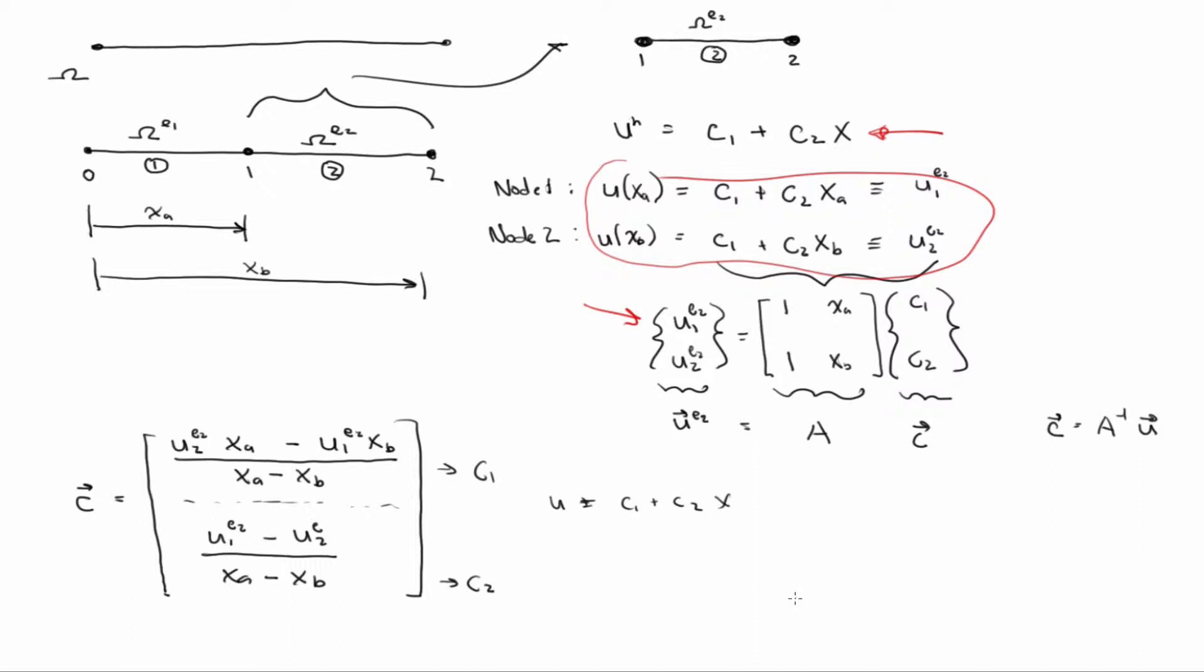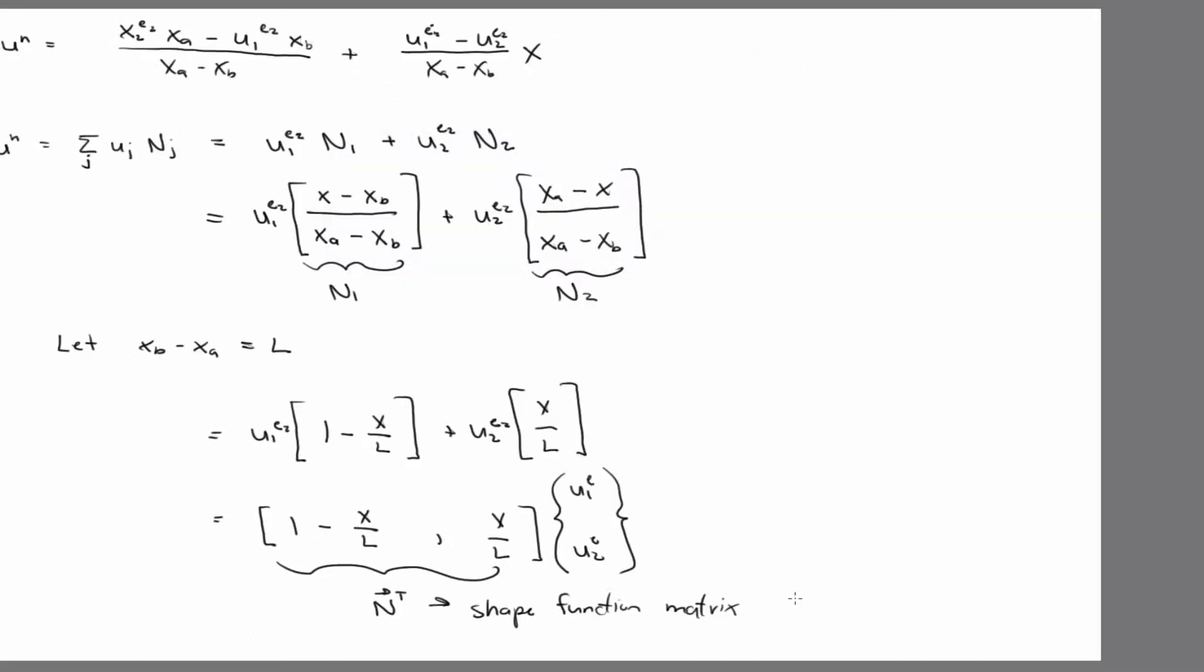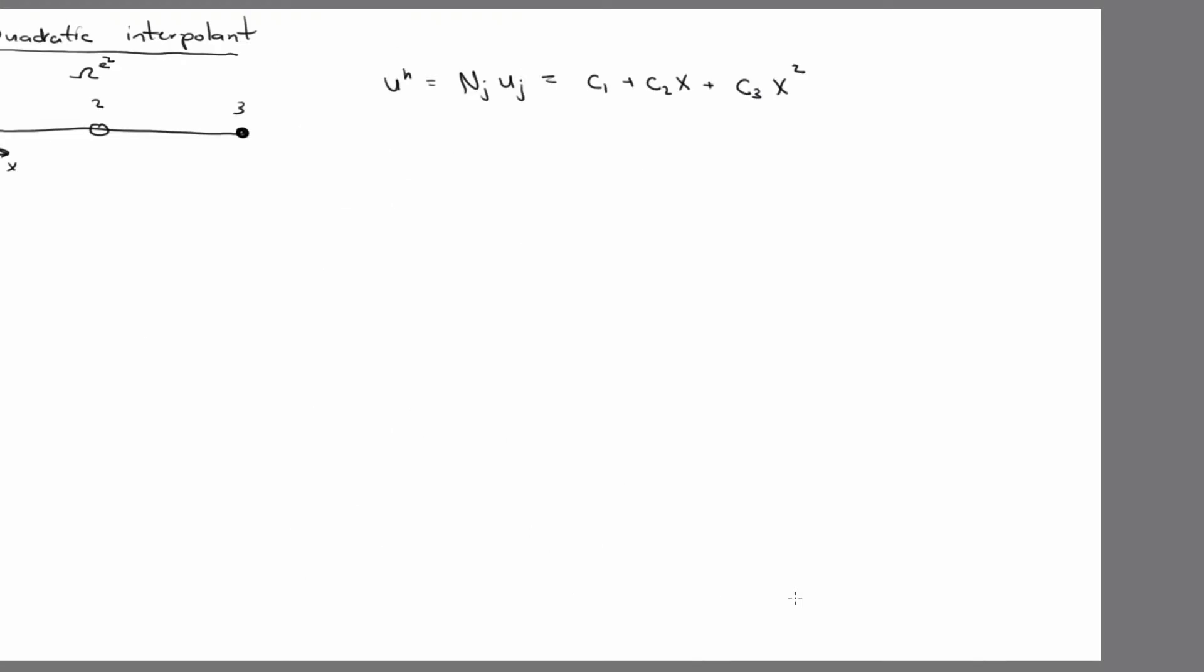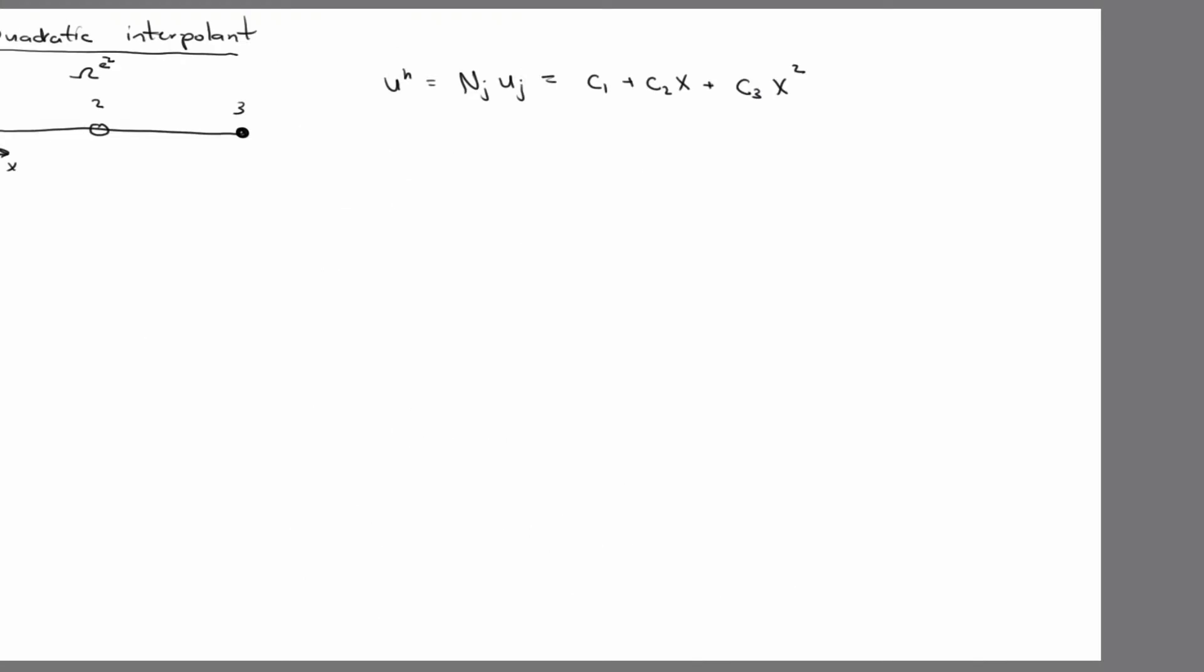So this time, I'm going to immediately, I'm just going to write down the matrix form directly. And in this case, our element is going to be of length l, such that node 2 is central with respect to node 1 and 3, so that there's l over 2 on each side.